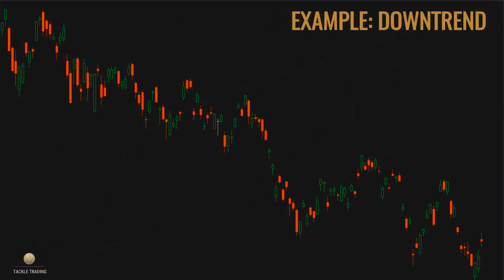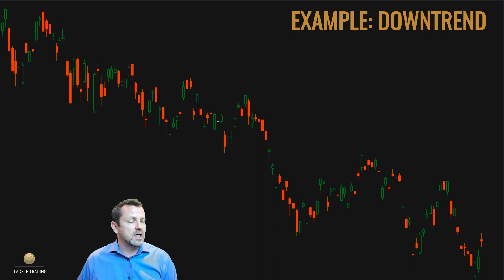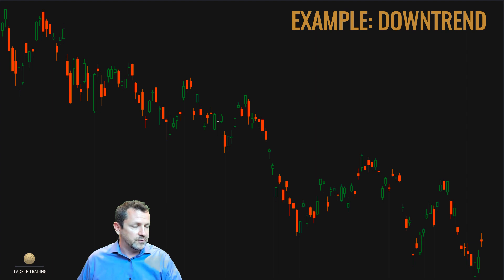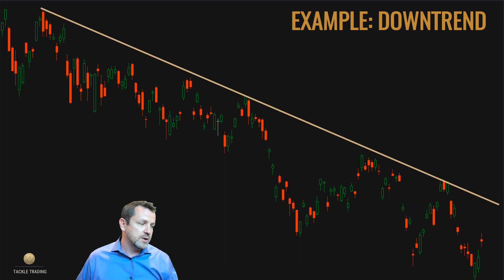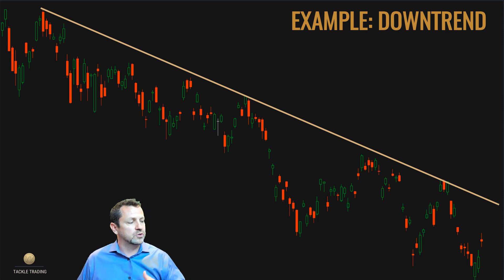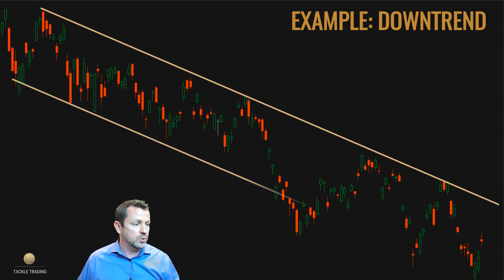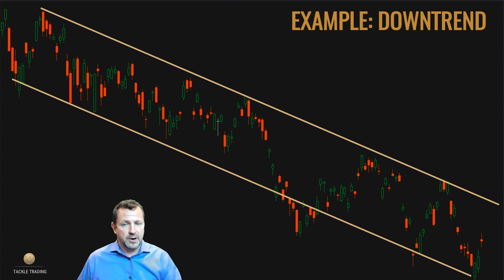Now if you do use trend lines, you're going to want to learn how to draw them correctly. You connect the dots and forecast that out into the future. If you're doing a downtrend, you want to connect it on the tops and forecast out down the tops — that gives you an area where you might expect some future selling pressure in that trend zone. You can also use the channel bottom for targeting and things of that nature.